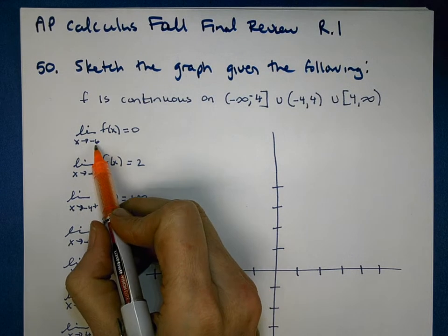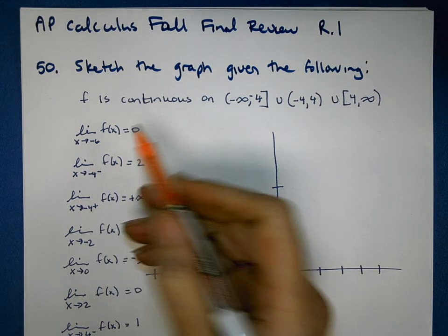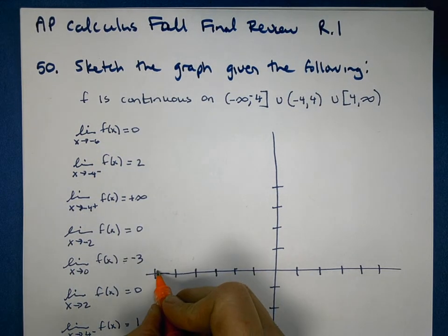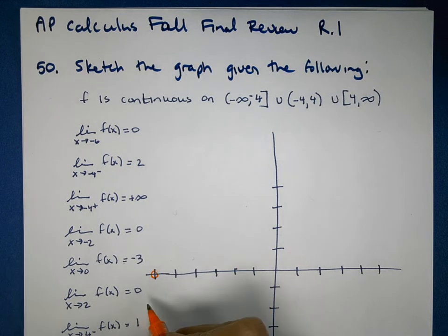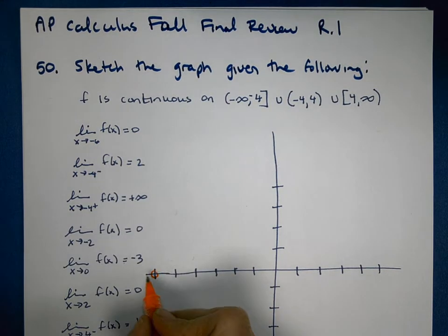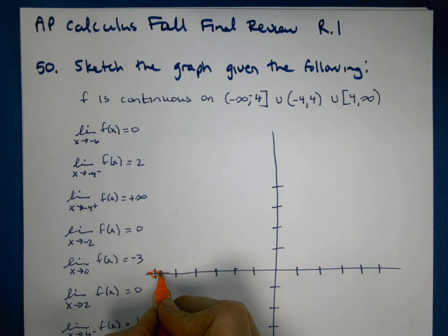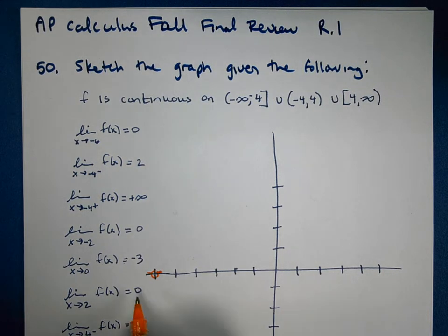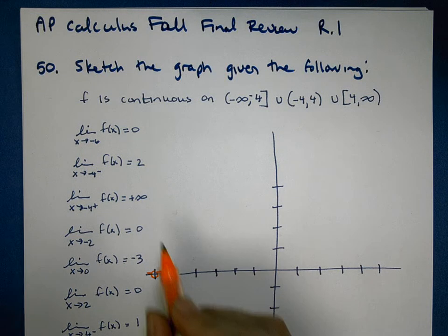So here is a point when x is negative 6, the y value appears to be 0. So at negative 6, I'm going to put an open point at 0. And because it doesn't have a little plus or minus after, I know that it comes in and out of negative 6, 0.